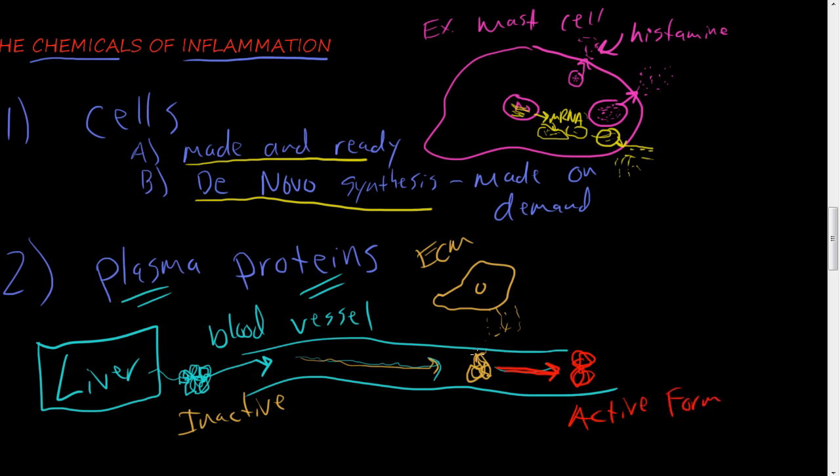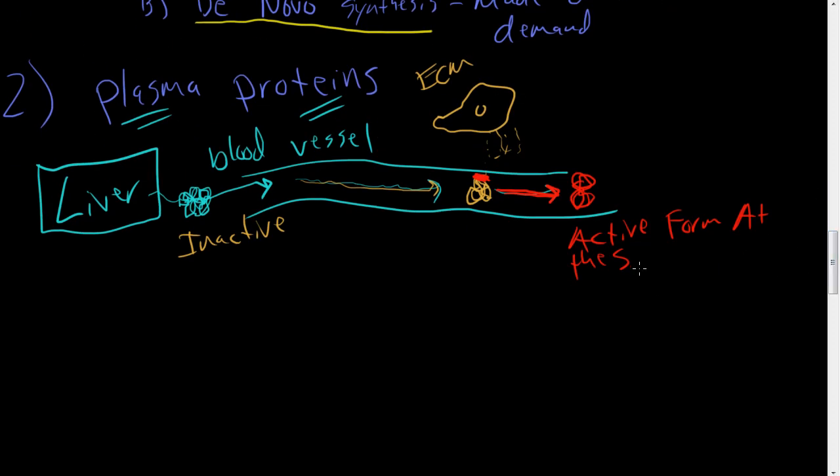What happens is a little piece right here might get cleaved off by an enzyme or might get converted somehow to become an active form. So the inactive form gets changed to an active form at the site of inflammation.